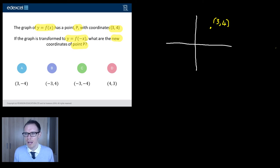And the question is, what happens to point P when it undergoes this transformation, y = f(-x)? Now, I'm going to be entirely honest with you. At some stage, you're going to have to get your head down and learn what each of these different transformations does.